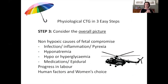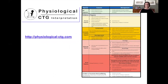Anytime you look at the CTG, don't lose the overall picture — the helicopter view or umbrella to wrap all your decision making. Exclude non-hypoxic causes of fetal compromise, take into account which stage of labor you are in, how labor is progressing, and of course women's choice and human factors. For more information, please look at the website where you can download the guidelines, toolkits, and the table with the types of hypoxia. Thank you.